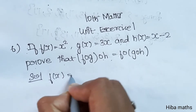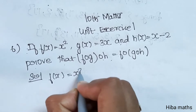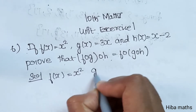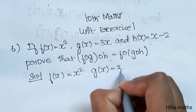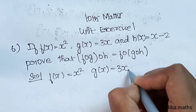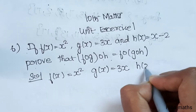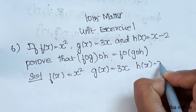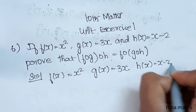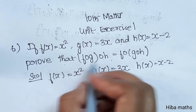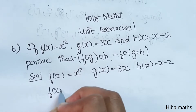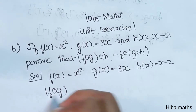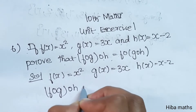F of x is equal to x square, g of x is equal to 3x, and h of x is equal to x minus 2. First, LHS is equal to f of g of h.